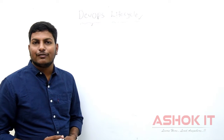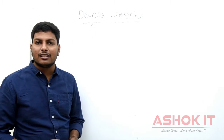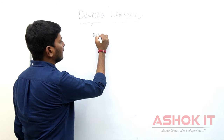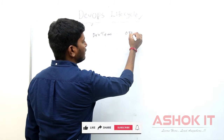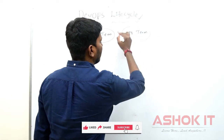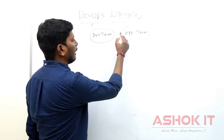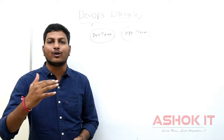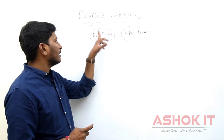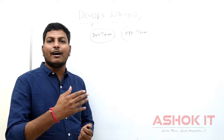DevOps is the combination of development plus operations. Currently in companies we are following this DevOps culture to automate the application deployment process. In the project, a development team and an operations team will be available. The development team is responsible to write the code, and the operations team is responsible to build and deploy that code into a server. For high quality deliveries, there should be collaboration between the development team and the operations team — that's where DevOps culture comes into picture.